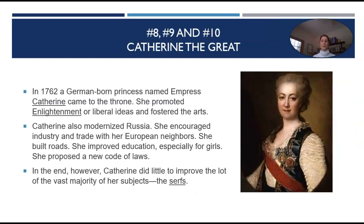In 1762, a German-born princess named Empress Catherine came to the throne. She promoted Enlightenment or liberal ideas and fostered the arts. Catherine also modernized Russia — she encouraged industry and trade with her European neighbors, built roads, improved education especially for girls, and proposed a new code of laws. In the end, however, Catherine did little to improve the lot of the vast majority of her subjects: the serfs.